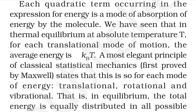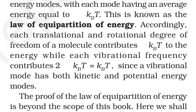In thermal equilibrium at absolute temperature T, for each translational mode the average energy is ½kBT. A most elegant principle of classical statistical mechanics, first proved by Maxwell, states that in equilibrium the total energy is equally distributed in all possible energy modes, with each energy mode having an average energy of ½kBT. This is the law of equipartition of energy. Each translational and rotational degree of freedom contributes ½kBT, while each vibrational frequency contributes 2 × ½kBT = kBT, since a vibrational mode has both kinetic and potential energy.